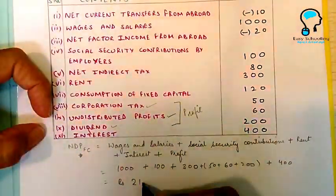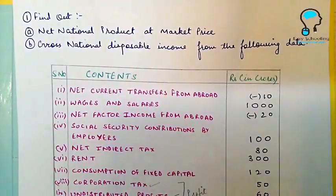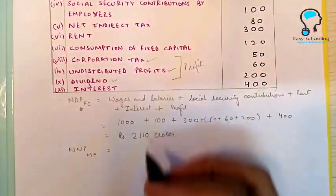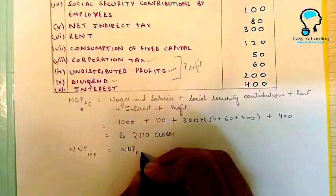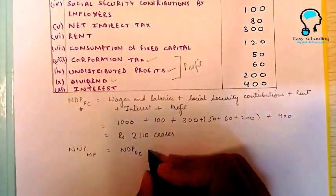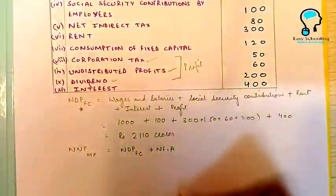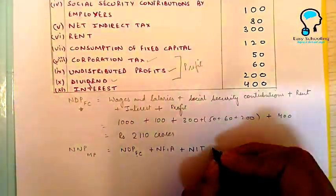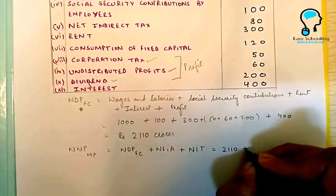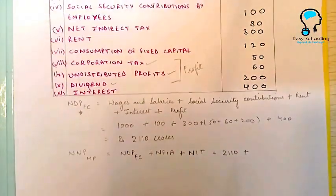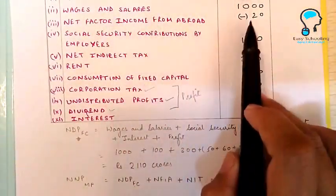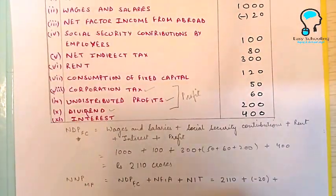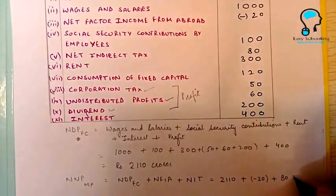NDP FC comes to rupees 2110 crores. We are asked to calculate NNP MP and gross national disposable income. NNP MP equals NDP FC plus net factor income from abroad plus net indirect taxes: 2110 + (−20) + 80.